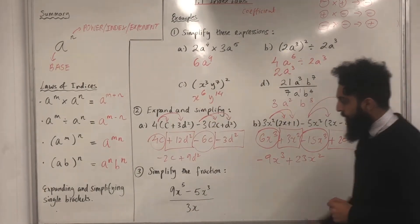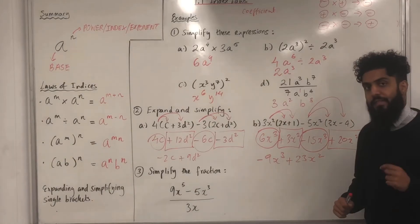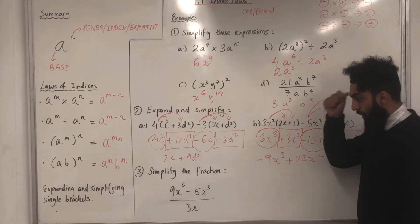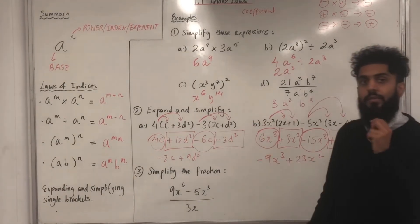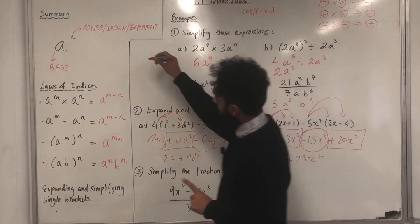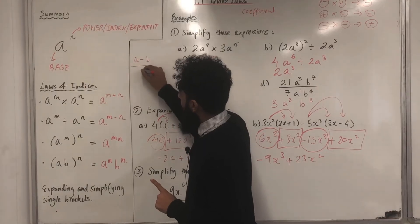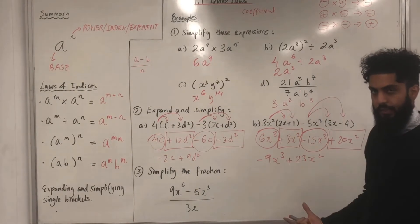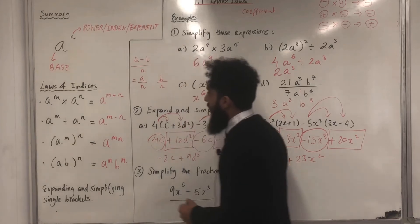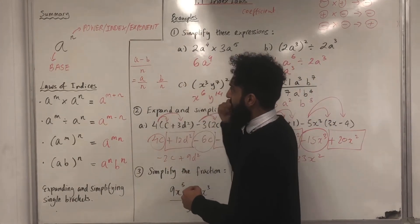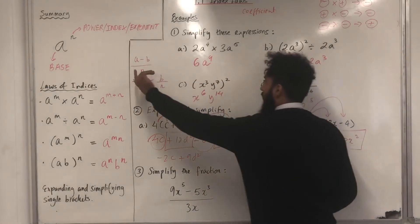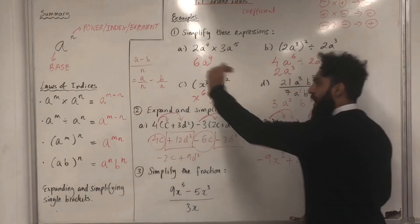Example 3: simplify the fraction 9X to the power 5 minus 5X cubed, all divided by 3X. To simplify this, there is an important rule: if you have A minus B all over N, this can be split into two fractions — A over N minus B over N.